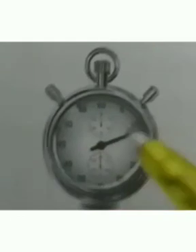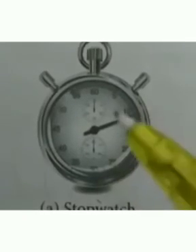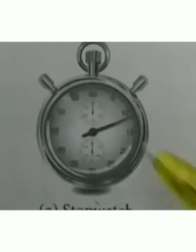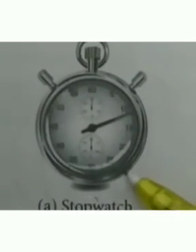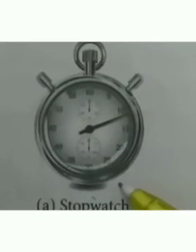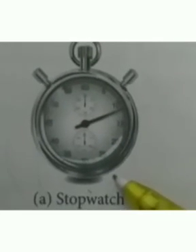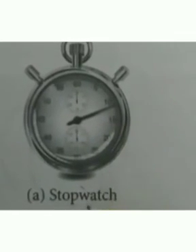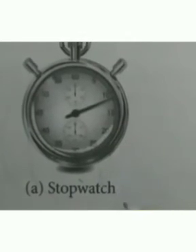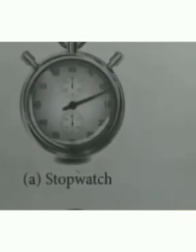Another device is stopwatch. It is a device which helps to measure the time taken for a particular event. Such type of devices are used in modern day sports events which require a very high degree of precision. It is marked in seconds. This watch has to reset to zero every time before measuring the time.